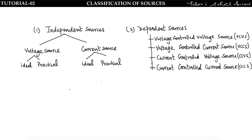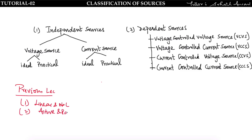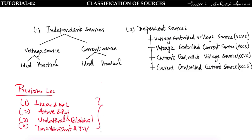Hello everyone, welcome to tutorial two. In this tutorial we are going to study about classification of sources. In the previous lecture we studied about the classification of elements: linear and nonlinear elements, active and passive elements, unilateral and bilateral elements, and time variant and time invariant elements. These four things were discussed in tutorial number one.